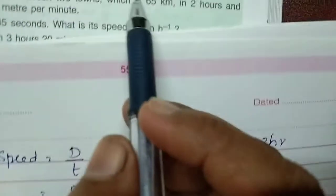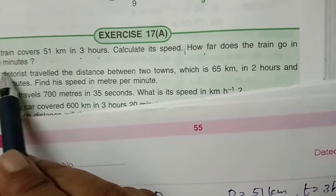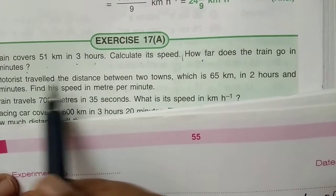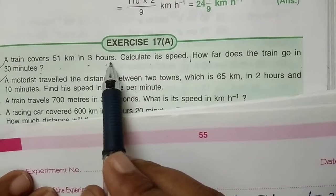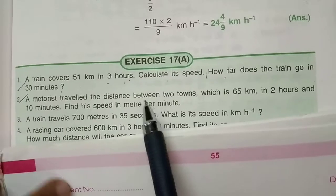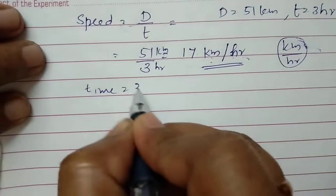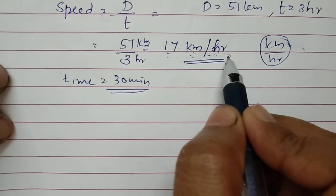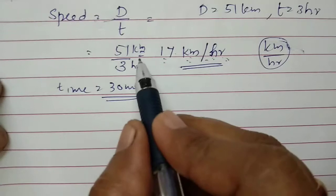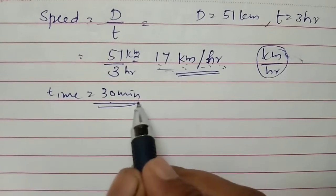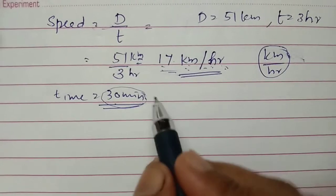In the second part of this question: how far does the train go in 30 minutes? Always remember, you have to pay attention to the units given. The time is given as 30 minutes, but speed was calculated in kilometers per hour — meaning 1 hour, the train travels 17 kilometers. So first we have to convert 30 minutes into hours. Since 1 hour equals 60 minutes, 30 divided by 60 gives us 1/2 hour.